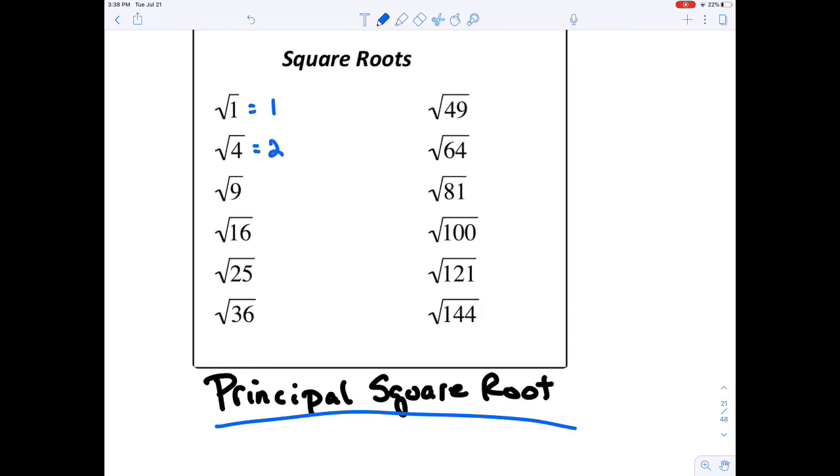What number times itself equals 4? What number times itself equals 9? And if I jump to the other column, what number times itself equals 81? And 100? And so on. So you get the idea on how you could do square roots.